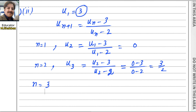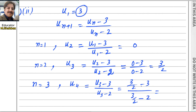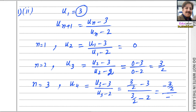When n equals 3, we can find u4. It will be u3 minus 3 divided by u3 minus 2. Substituting u3 equals 3/2: the numerator is 3/2 minus 3 which equals negative 3/2, and the denominator is 3/2 minus 2 which equals negative 1/2. The 2s cancel out and finally we get the answer 3.